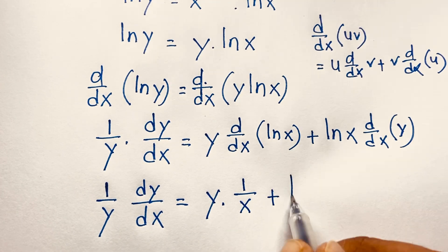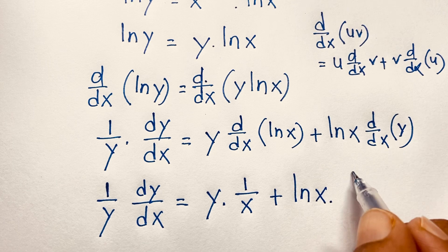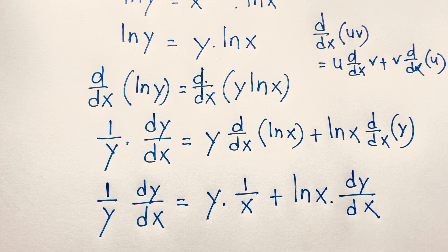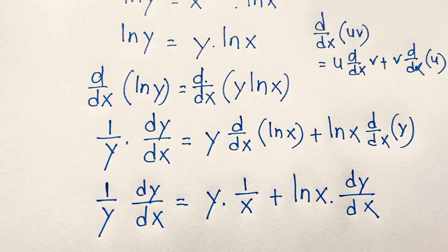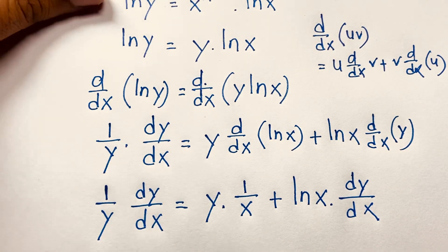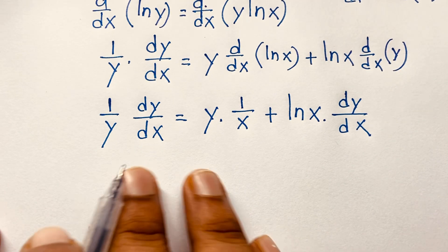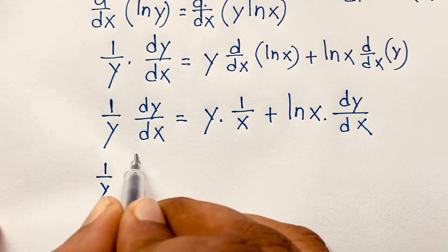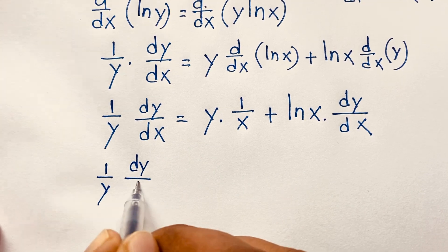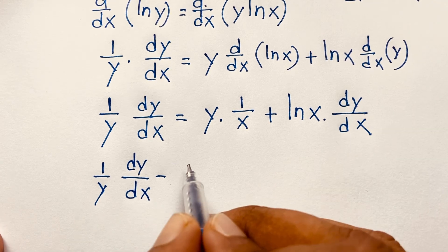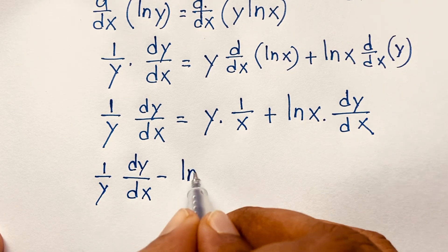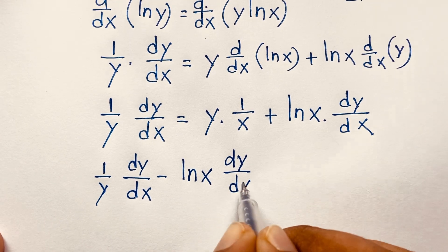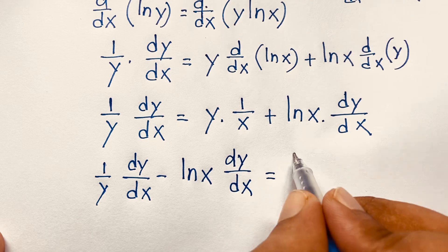After applying the product rule, the right side gives: y times one over x, plus ln x times dy/dx. So we now have: one over y times dy/dx equals y over x plus ln x times dy/dx. Now we want to isolate dy/dx.